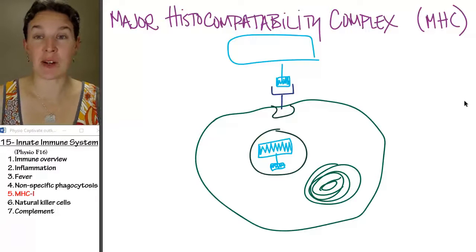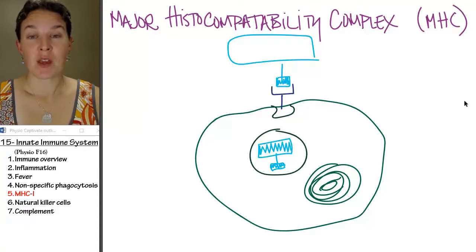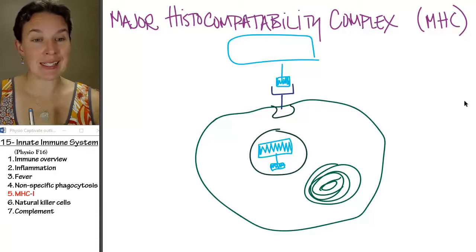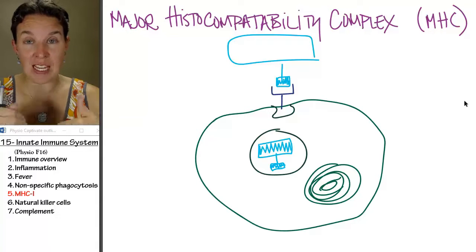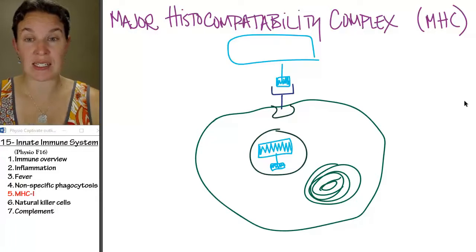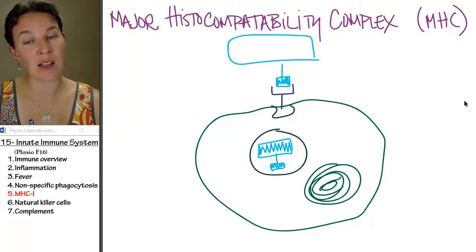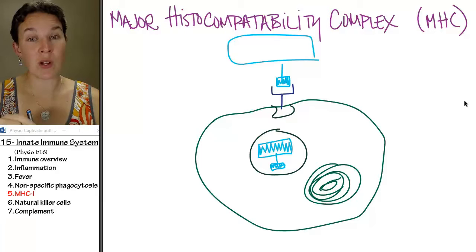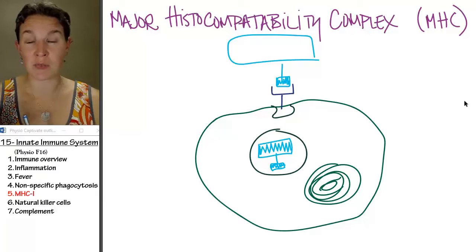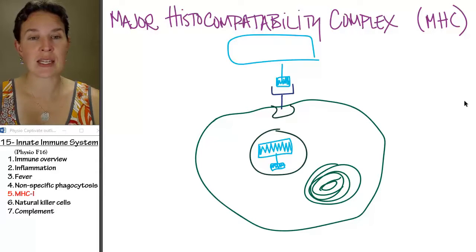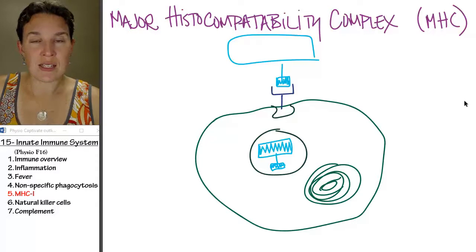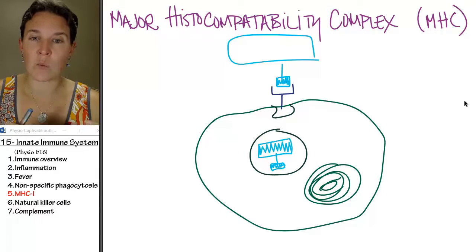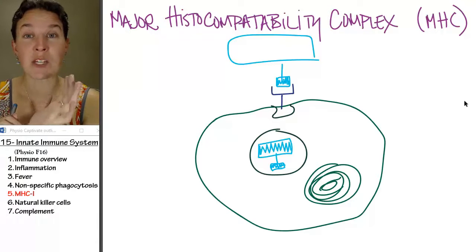I really do think this might be one of my favorite things to talk about. So in the last section we saw how things get phagocytosed or yumptialized into the cell. And the reason why I want to talk about the MHC platform right now is because that nonspecific phagocytosis, there's a process that can happen where we can post information about what was phagocytosed.